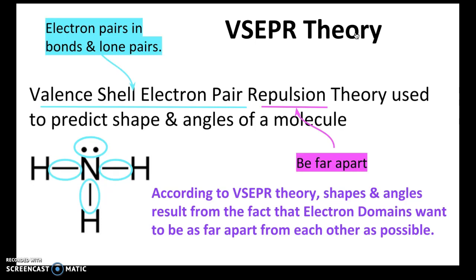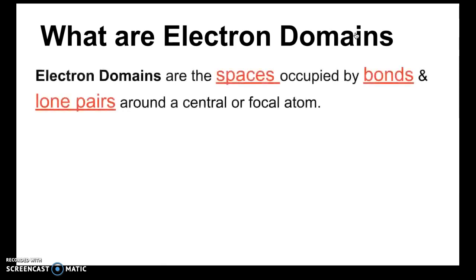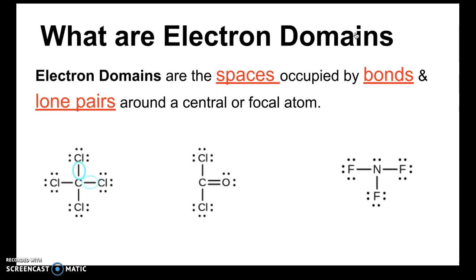In order to determine the shapes of the molecules, we need to know how much space around that central atom is occupied by electron pairs, and what type of electron pairs — whether bond pairs or lone pairs. For that we use what's called electron domains. Electron domains are the spaces occupied by bonds and lone pairs around a central or focal atom. What we're going to learn next is how to count these electron domains and lone pairs.